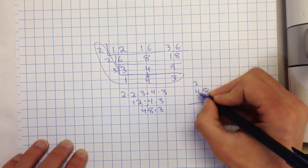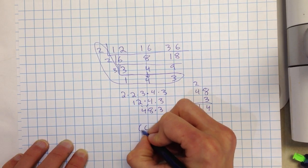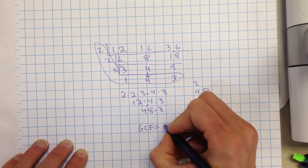4, 24. 3 times 4 is 12. Plus 2 gives me 14. And I would get GCF equals 144.